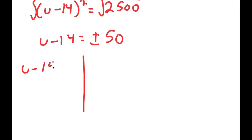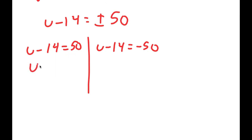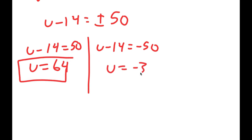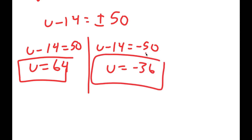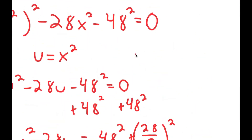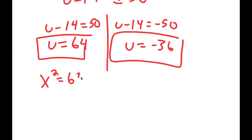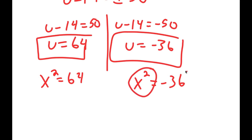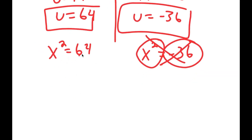Taking the square root of both sides gives u minus 14 equals positive or negative 50. So we get two equations: u minus 14 equals 50 gives u equals 64, and u minus 14 equals negative 50 gives u equals negative 36. Since u equals x squared, x squared equals 64 or x squared equals negative 36. We can't have a number squared equal to a negative number in the reals, so x squared equals 64 is the only valid real equation. Taking the square root gives x equals positive or negative 8.